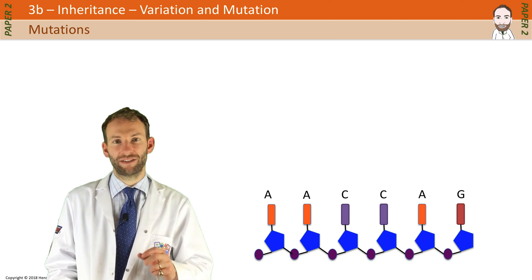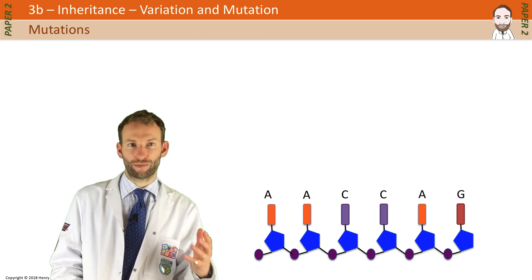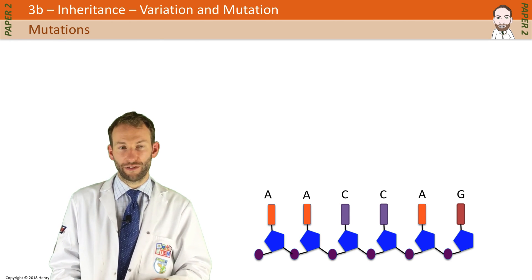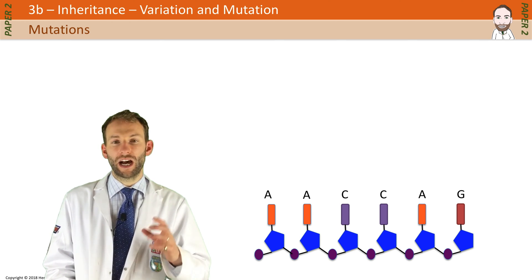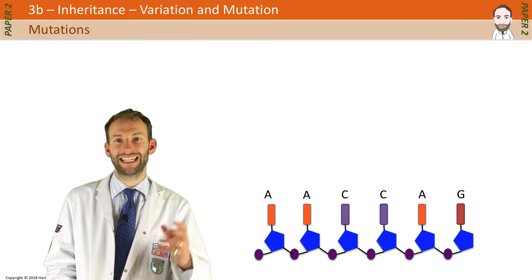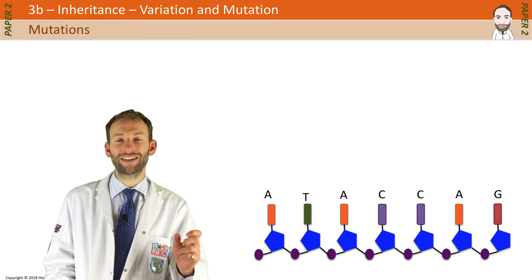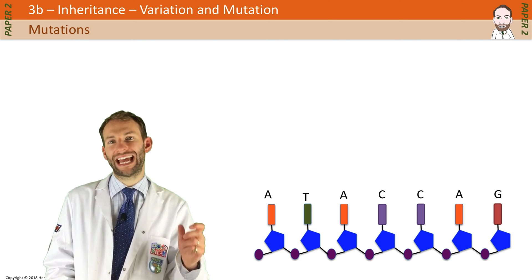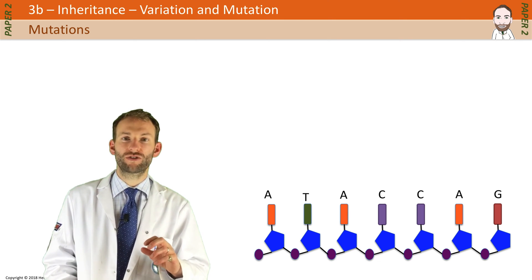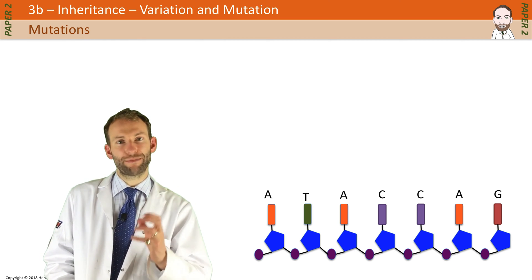Mutations change the sequence of bases in a gene. Different bases means you're going to get different amino acids, which can then change the protein. This all relates to the process of protein synthesis. The genetic code works in threes, called codons. So here we've got A-A-C, C-A-G — but if I add a mutation, say I add in a T, then everything shifts along and my first codon becomes A-T-A, which may code for a different amino acid, and that may then change the protein structure.